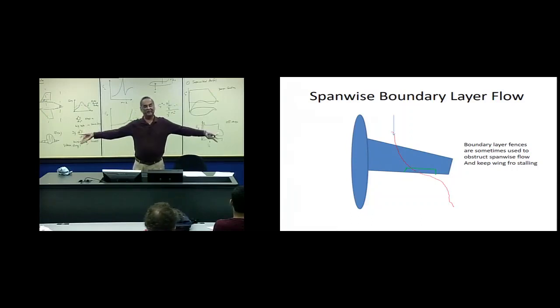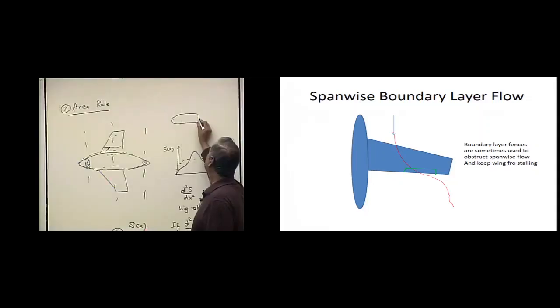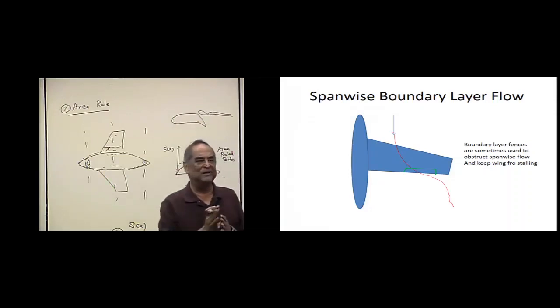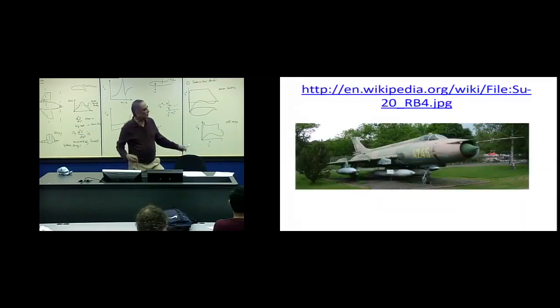Now, let's say that you deflect the aileron, wanting to produce extra lift, roll the airplane. The boundary layer says, okay, you are deflecting the aileron, I have such a low momentum, I am going to just separate, I am not going to follow the aileron. So, the aileron has become completely ineffective. So, if the aileron, for highly swept wings, that separated boundary layer may cause the aileron to may become ineffective.